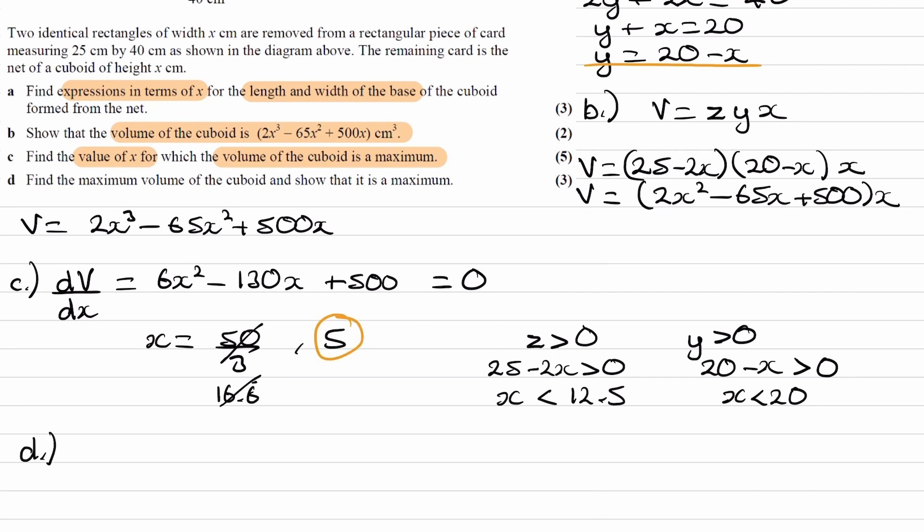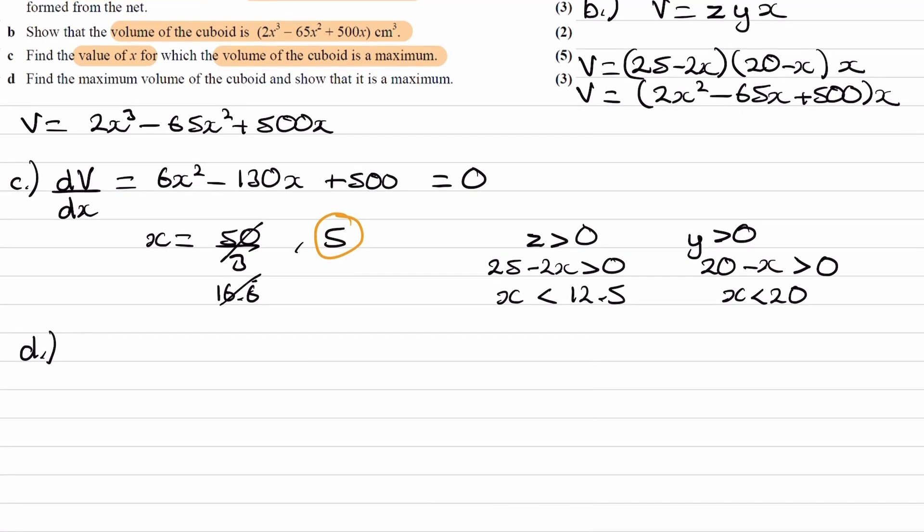And then for part D, we're trying to find the maximum value of the cuboid and show that it is a maximum. So then we have to differentiate one more time to prove that this is a maximum. So differentiate this again, and we end up with 12x minus 130. We put in x is equal to 5 into this, and we end up with minus 70. Minus 70 is less than 0, which means the gradient is decreasing, and therefore this must be a local maximum.